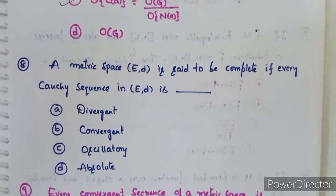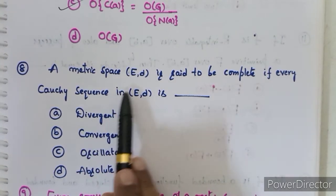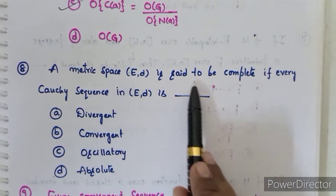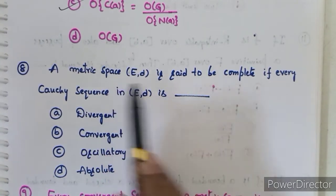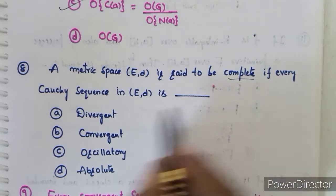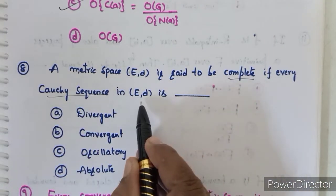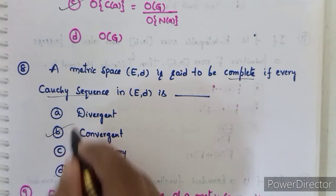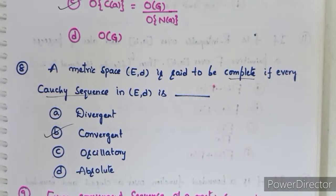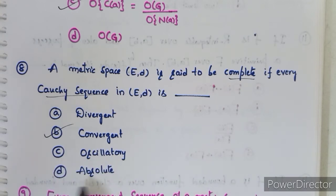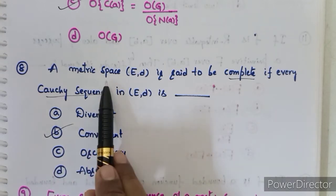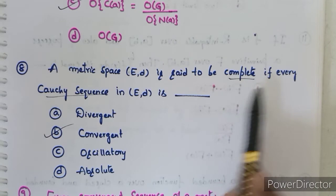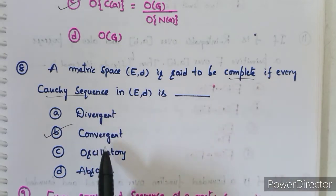Eighth question: a metric space E is said to be complete if every Cauchy sequence in that metric space is convergent. Option B, convergent, is correct. The given options were: divergent, convergent, oscillatory, and absolute.